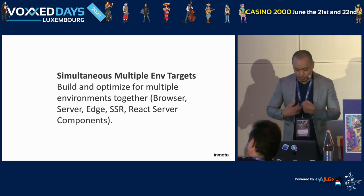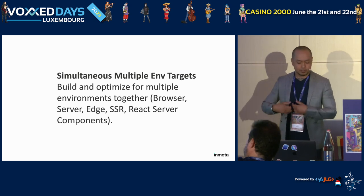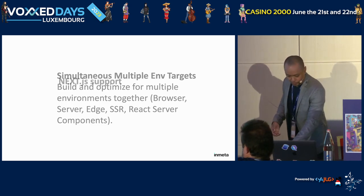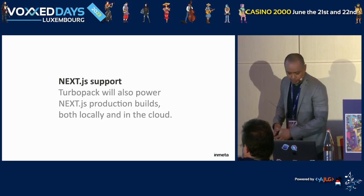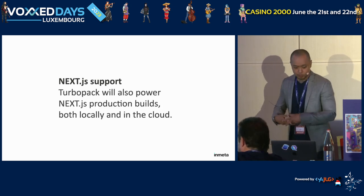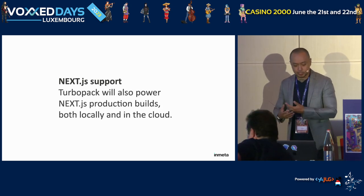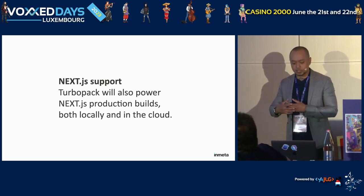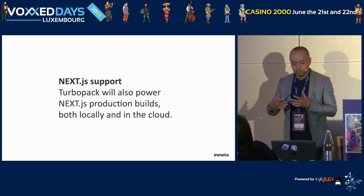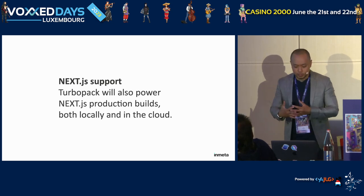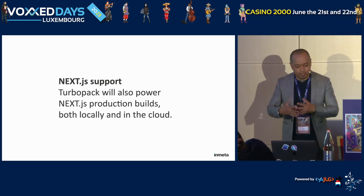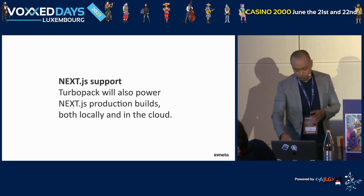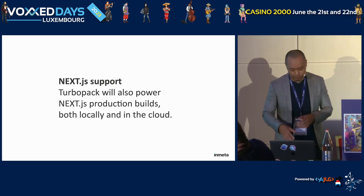Turbopack can build and optimize for multiple environments together: browser, server, edge, server-side rendering, and React Server Components. Turbopack has support for Next.js, and Vercel is planning to use Turbopack to create a remote cache that gives developers a single source of cache distributed across a team. Remote caching is a great idea.